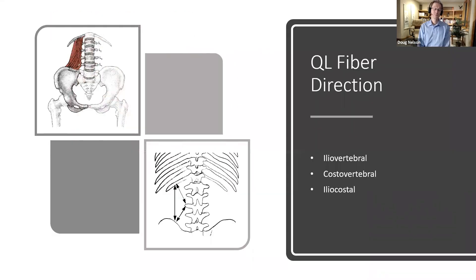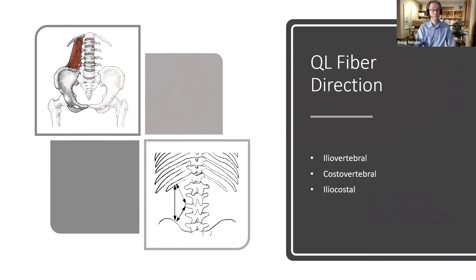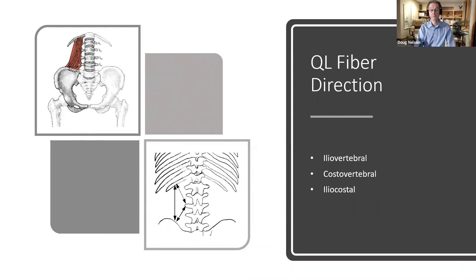Of course, we'll spend time with the QL and focus on the three fiber directions — the iliovertebral, costovertebral, and iliocostal fibers — what defines each one of them and how you can isolate them. That's even more important. This is a very important muscle, but not all of it is important for the same reason, so we'll help you drill down inside of that. I think you're going to find it really fascinating.